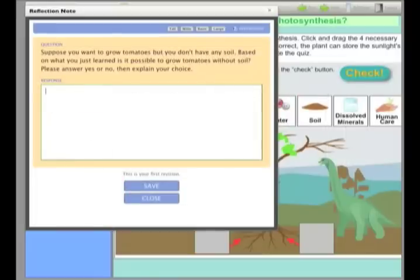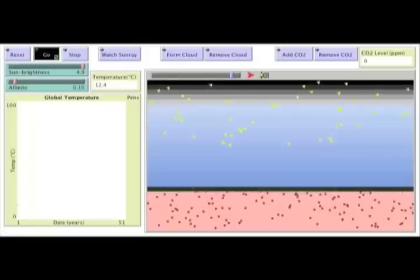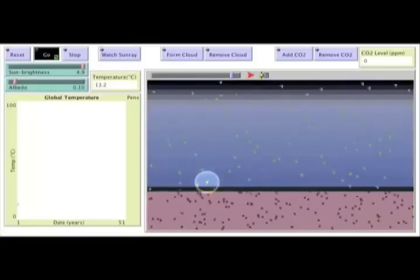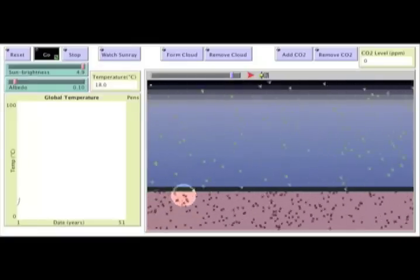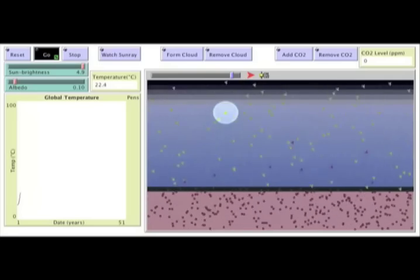Rather than reading about science, students use interactive materials to figure out how things work. For example, in the WISE Global Warming Project, students learn about the climate as a system by experimenting with variables.